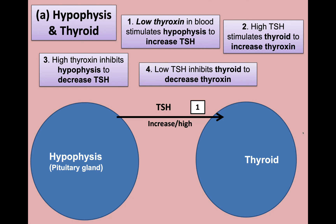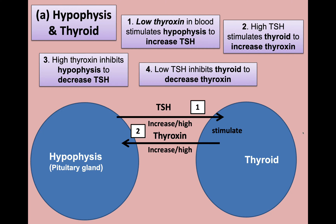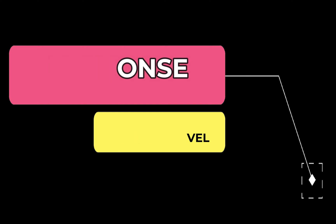When the pituitary gland secretes more TSH, that TSH travels to the thyroid gland. The thyroid stimulating hormone then stimulates the thyroid gland to produce more thyroxin. The thyroxin levels in the blood start to increase, rising back to normal. The stimulus was low thyroxin levels; the response was to increase thyroxin levels so they could be brought back to normal in the blood.